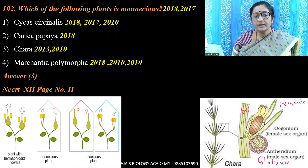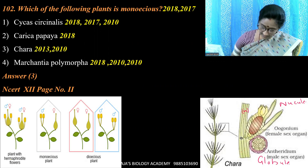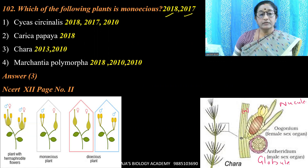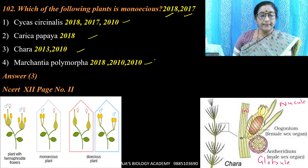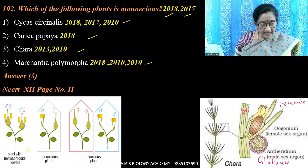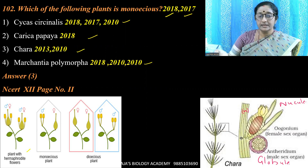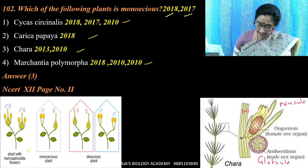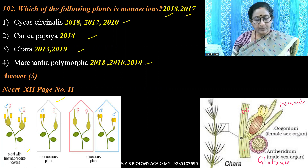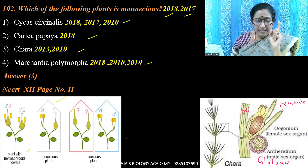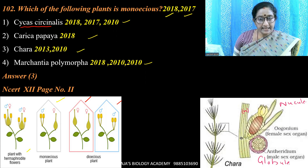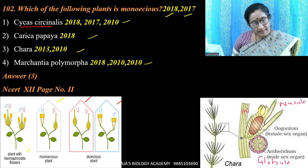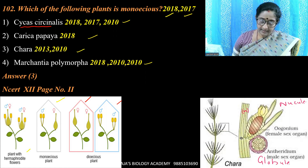Question 102: Which of the following plants is monoecious? This question appeared in 2018 and 2017. The options are Cycas circinalis, Carica papaya, Chara, and Marchantia. A plant is hermaphrodite where both male and female reproductive structures are present in the same flower. A monoecious plant possesses both male and female flowers on the same plant. In a dioecious condition, male and female flowers are located on different plants. Cycas circinalis is a gymnosperm where gametophyte and sporophytic stages are dioecious.